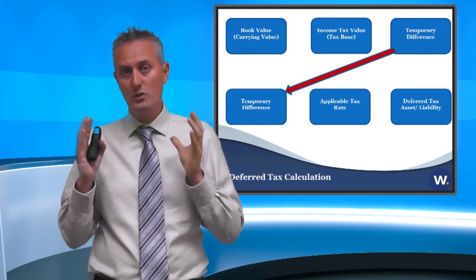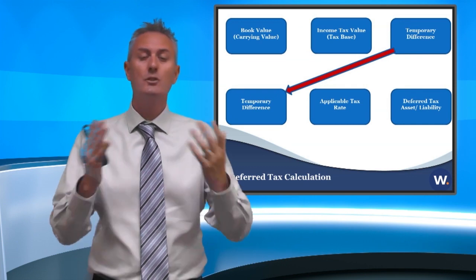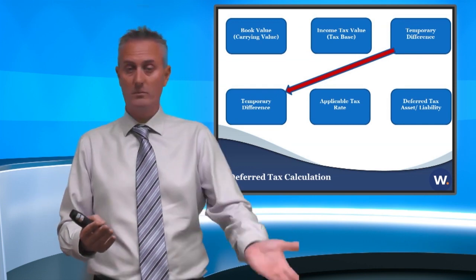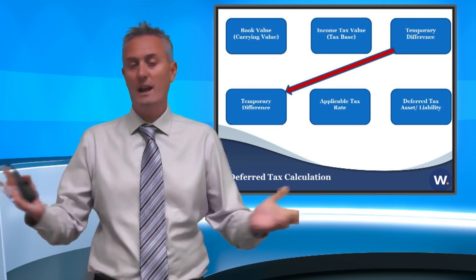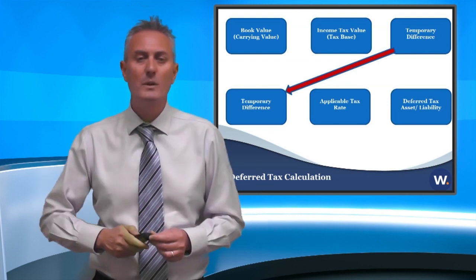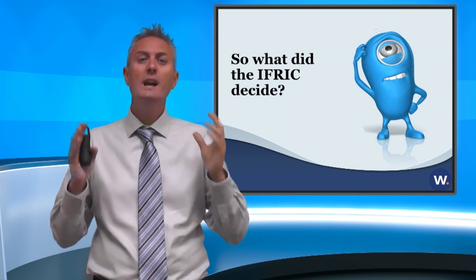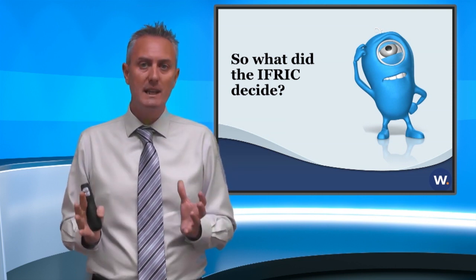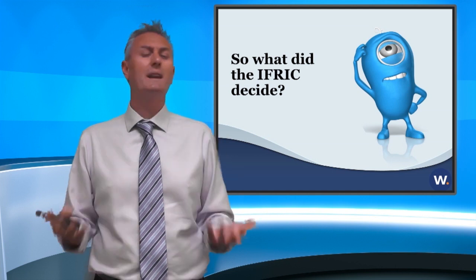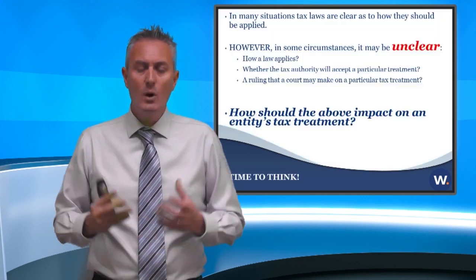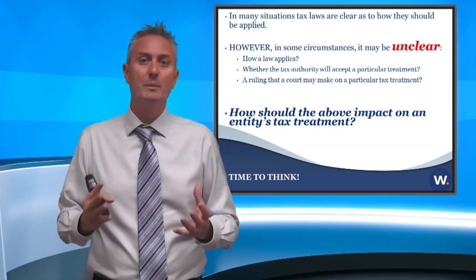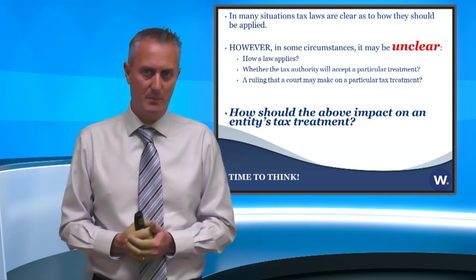Once you've got your deferred tax and your current tax, you disclose those — put them into the balance sheet, income statement, or equity depending on where they belong — and that effectively is IAS 12. So what did IFRIC 23 come along and say? IFRIC 23 in essence is dealing with uncertain tax positions. What I mean by an uncertain tax position: we know we're in a situation in many places in the world where people take what I call aggressive tax positions.